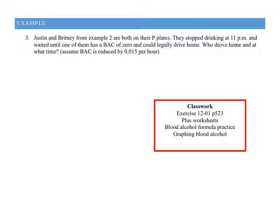Let's keep going with Justin and Brittany. They're both on their P plates and stopped drinking at 11 p.m. and waited for one of them to have a BAC of zero so they could legally drive home. Who drove home and at what time, assuming BAC reduced by 0.015 per hour? We need to work it out for both of them. Justin's BAC was 0.044. The number of hours equals BAC over 0.015.